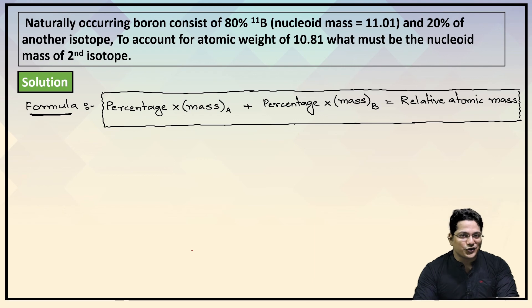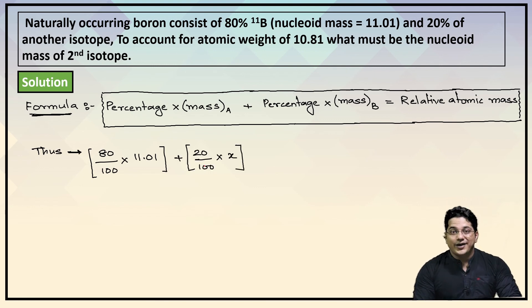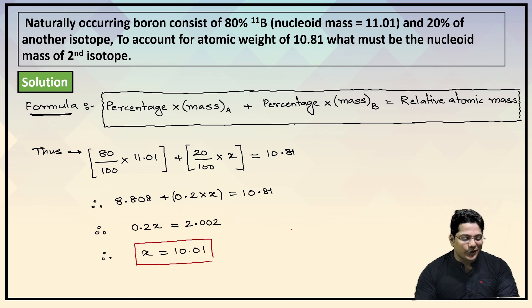If we plug in all the values, check what you get. First, what is the first isotope percentage? It's 80%, so 80 divided by 100 × 11.01, because 11.01 is the nucleoid mass. Similarly, how much is the second percentage? If 80% is the first, the second would be 20. So this becomes 20 upon 100. This nucleoid mass you don't know, so let's keep it as X. This equals 10.81. Now if we solve this, you get 8.808 + 0.2X should equal 10.81. And solving further, you would simply get X equals 10.01. That means the nucleoid mass of the second isotope is 10.01.